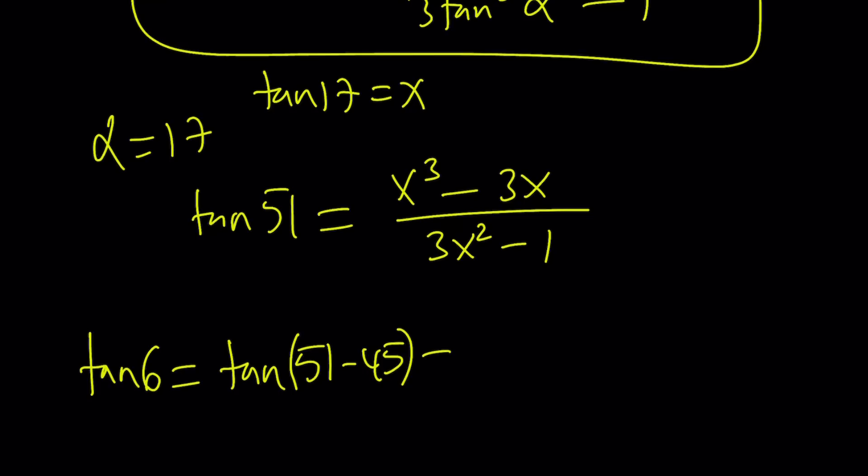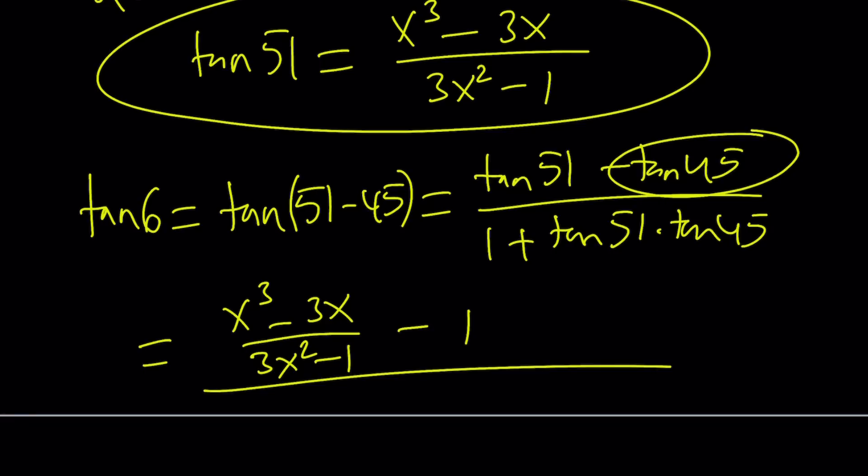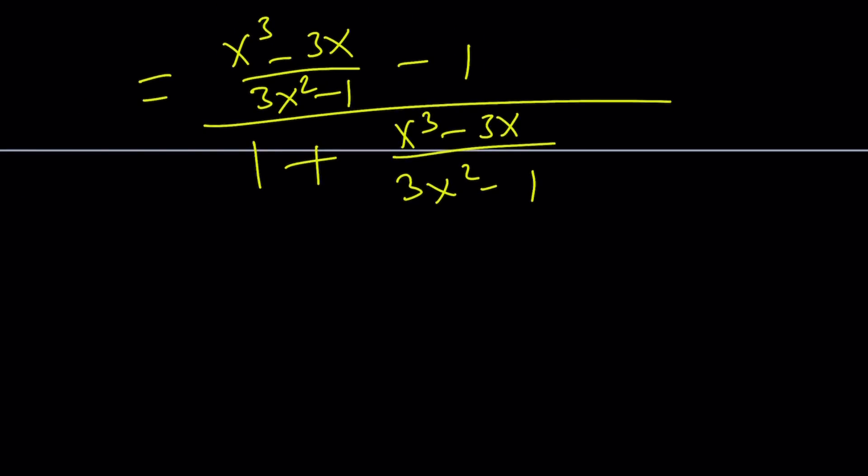What am I going to do with this? I do need tangent 6. And tangent 6 is just what? 51 minus 45, right? And then we're going to use a difference formula. What is it? Tangent 51 minus tangent 45 divided by 1 plus tangent 51 times tangent 45. Tangent 51 is this in terms of x. Yay! x cubed minus 3x over 3x squared minus 1. Minus 1 because tangent 45 is 1.